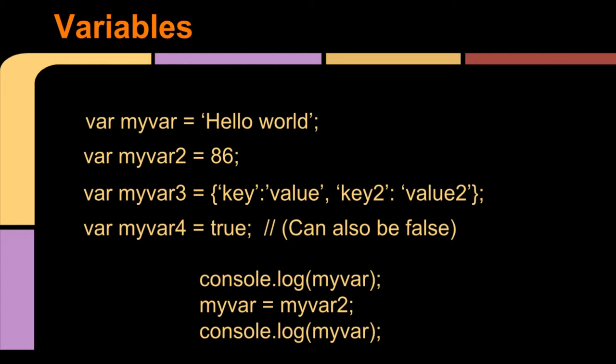Variables can also be reassigned at any point, and you can assign them the same value as a different one. So in this example, we have console.log myvar, which would print hello world. And then we're reassigning the value of myvar to be the same as myvar two, which is 86. So console.log myvar would now print 86. It's worth noting that the values are overwritten and not reassigned. So we haven't swapped the values of myvar and myvar two, they're now just both the same.